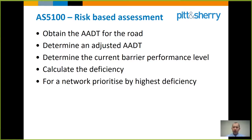The steps in AS 5900 bridge design code involve a risk-based assessment. It requires an assessor to obtain the AADT — the annual average daily traffic volume for the road. That figure is then adjusted using site-specific factors such as road gradient. You need an understanding of the current barrier performance, and once you have that you can compare it to the performance level required under the code's risk-based method. This enables you to identify a deficiency and prioritise any works to address the highest deficiency first.